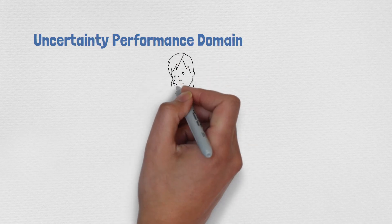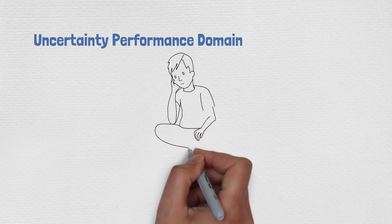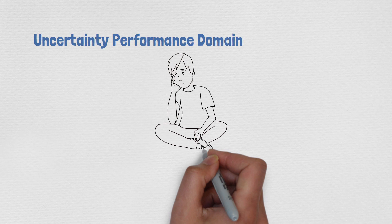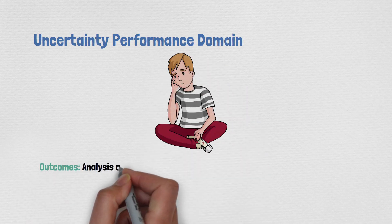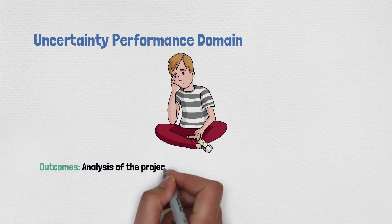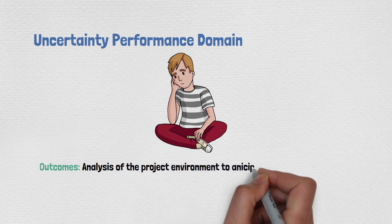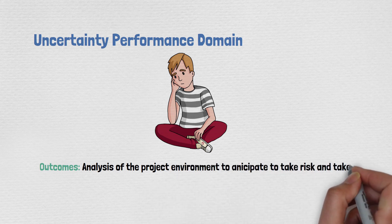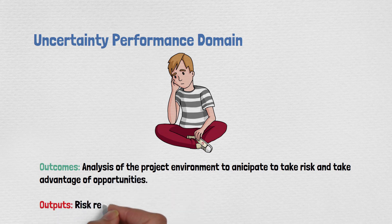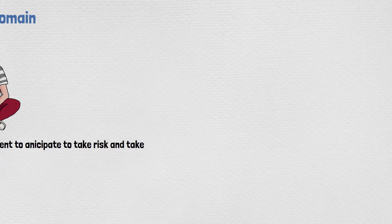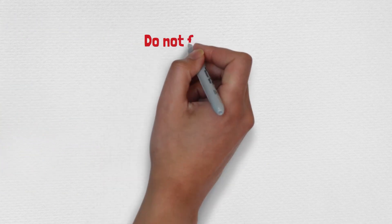The final one — Uncertainty, also called risk. This addresses the activities and functions associated with risk and uncertainty. The outcome is analyzing the project environment to anticipate and respond to risks, and also to take advantage of opportunities. From PMBOK 6, the outputs were the risk report and the risk register — those are the two key outputs.